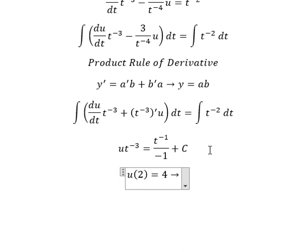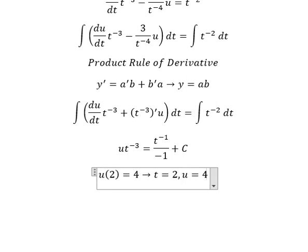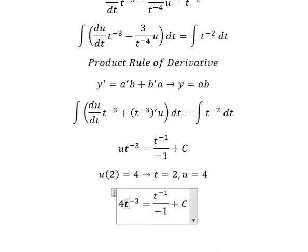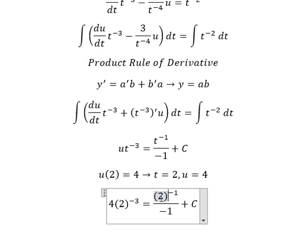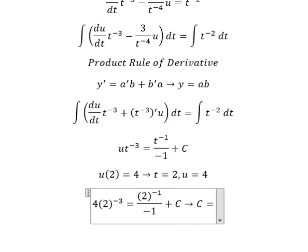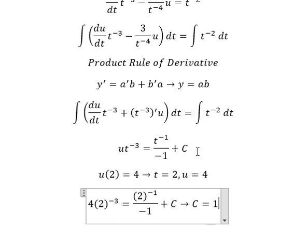Now we have the initial conditions: when t equals two, u equals four. I will put four in here and two in here. We calculate to find the value of C, and C equals one. So we put one in here.